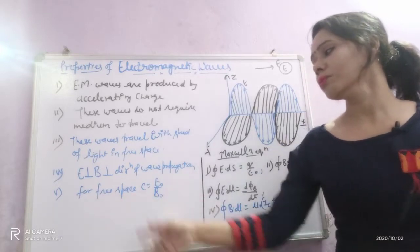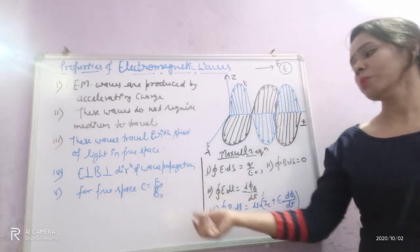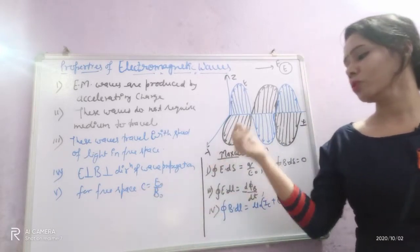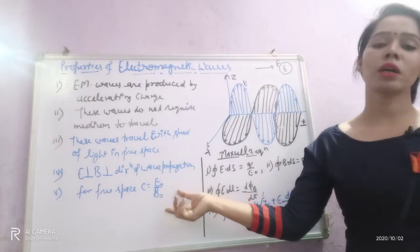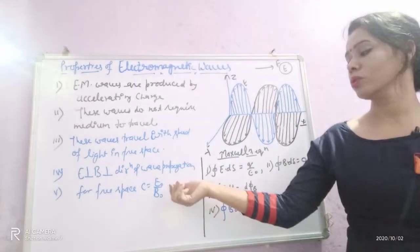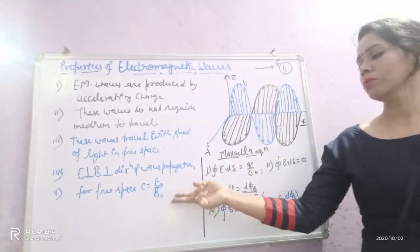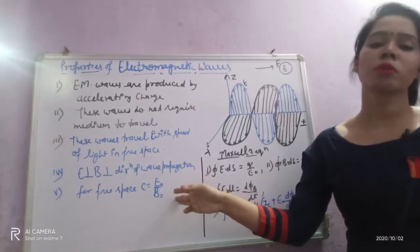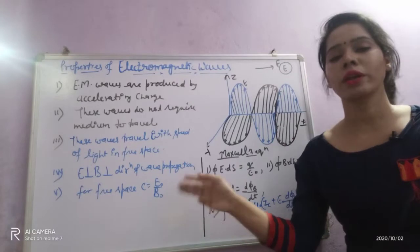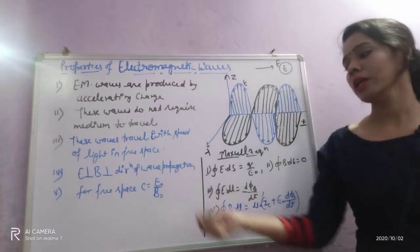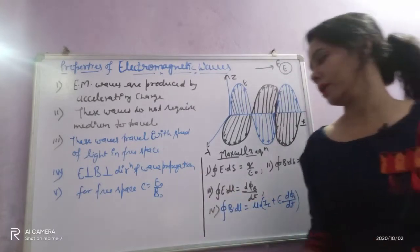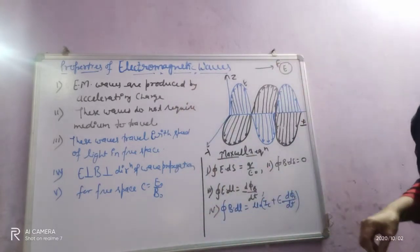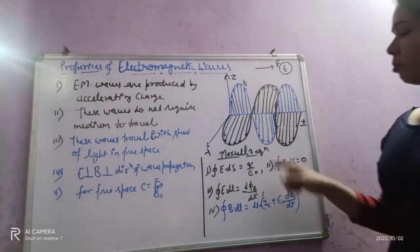The last property is that in free space, the velocity of electromagnetic waves is equal to 1/√(ε₀μ₀), which equals the velocity of light — that is, 3 × 10⁸ m/s. So these are the properties of electromagnetic waves.